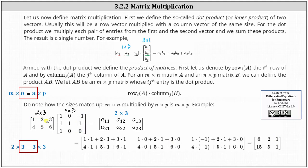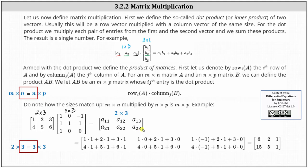Moving to row two, to find the entry a sub two comma one in the product, we find the dot product of row two in the first matrix and column one in the second matrix. This gives us four times one plus five times one plus six times one, which is equal to 15. Now let's find a sub two two. We find the dot product of row two in the first matrix and column two in the second matrix, giving us four times zero plus five times one plus six times zero, which is equal to five. For the last entry, row two column three, we find the dot product of row two in the first matrix and column three in the second matrix. This gives us four times negative one plus five times one plus six times zero, which is equal to positive one.